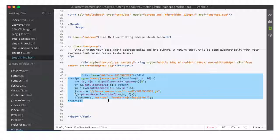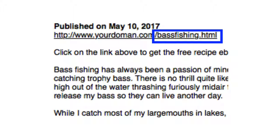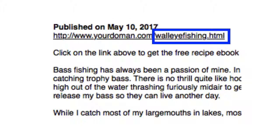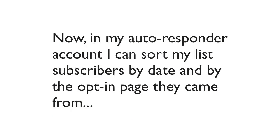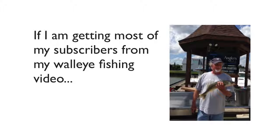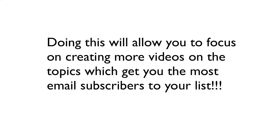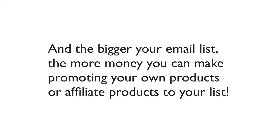I'd have three different forms on three different opt-in pages. On my bass fishing video, I'd put a link in my description to my bass fishing opt-in page. On my trout fishing video, I'd put a link to my trout fishing opt-in page. And on my walleye fishing video, I'd put a link to my walleye fishing opt-in page. In my autoresponder account, I can sort my list subscribers by the date they subscribed and by the opt-in page they came from. If I'm getting most of my subscribers from my walleye fishing video, then of course I'm going to make more videos on walleye fishing — fishing with live bait, artificial bait, from the shore, in the springtime. Doing this will allow you to focus on creating more videos on the topics that get you the most email subscribers. The bigger your email list, the more money you can make promoting your own products or affiliate products to your list.